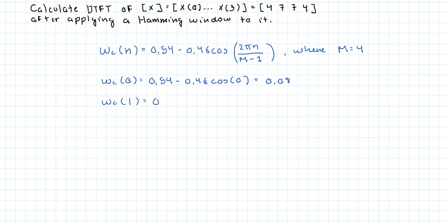w(1) is 0.54 minus 0.46 cosine of 2π over 3, and that's equal to 0.77.